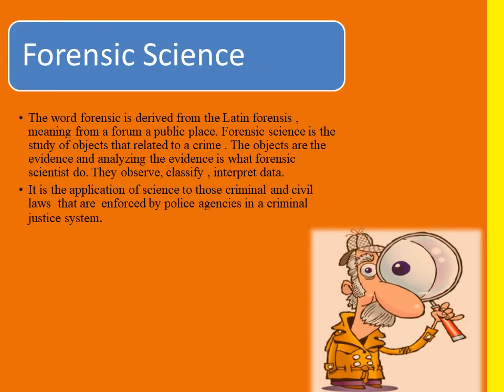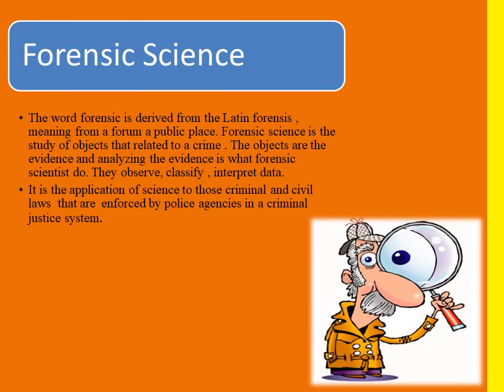Forensic Science. Before knowing the scope of Forensic Science in various disciplines, we should know what Forensic Science is. The word Forensic is derived from the Latin 'Forensics', meaning 'from a forum', a public place. Basically, Forensic Science is the study of objects that are related to a crime. These objects are evidences, which Forensic Scientists analyze, observe, classify, and interpret. It is the application of science to criminal and civil laws enforced by police agencies in a criminal justice system.